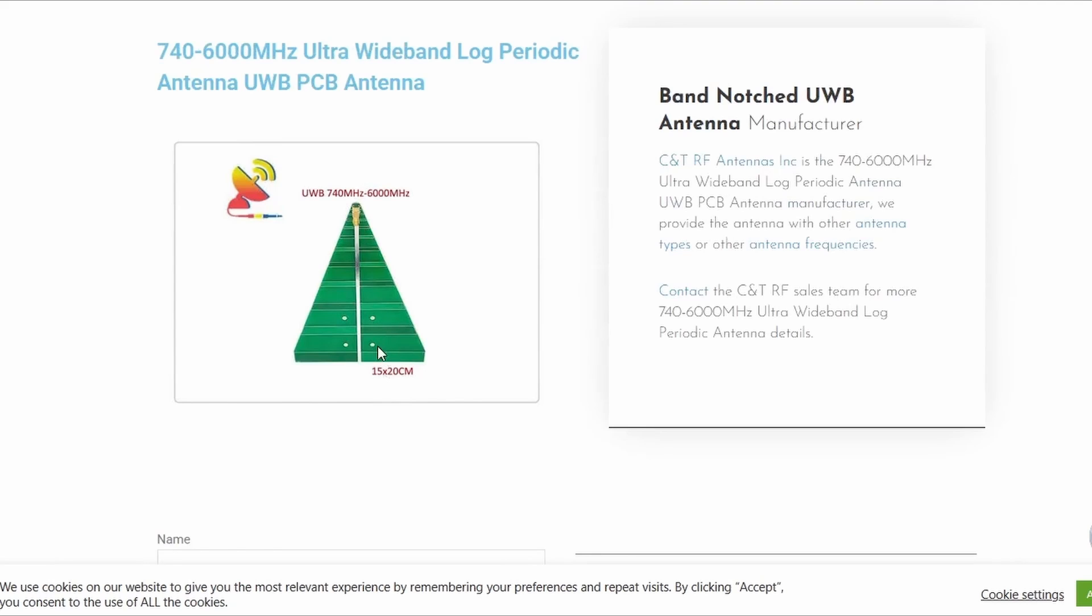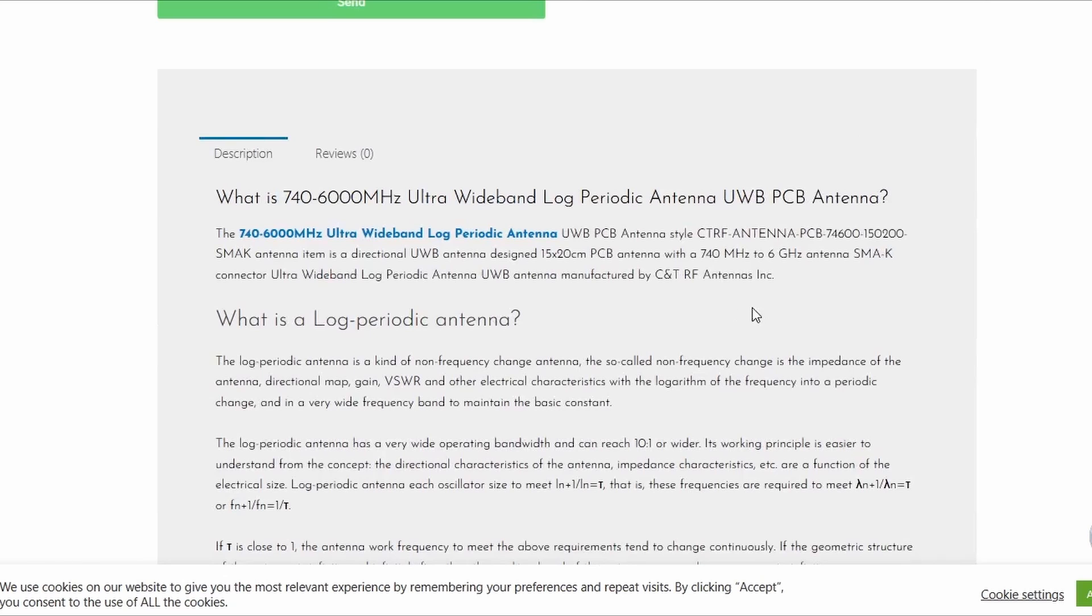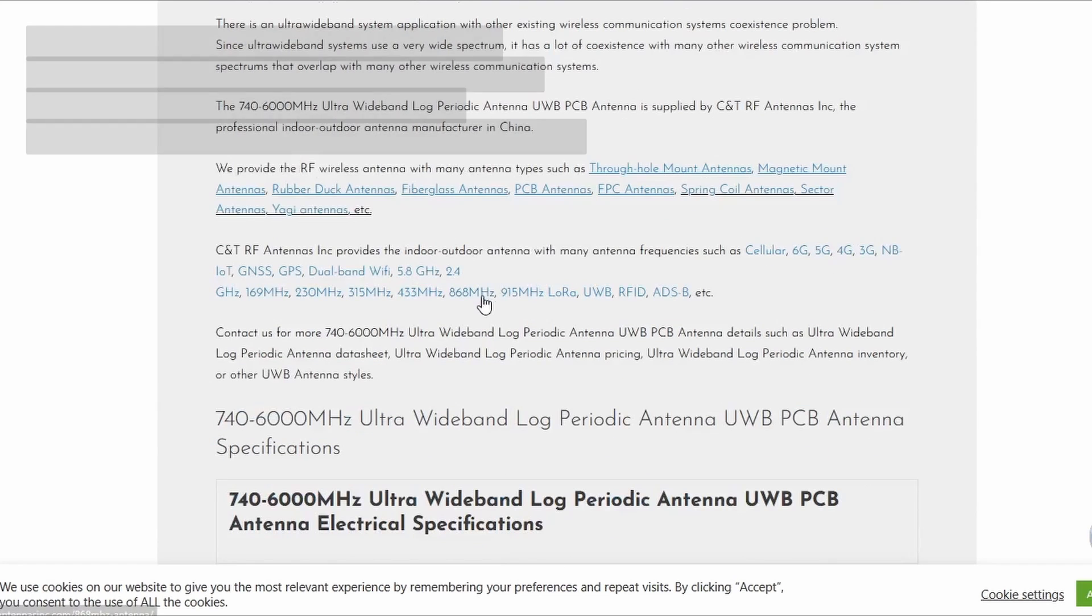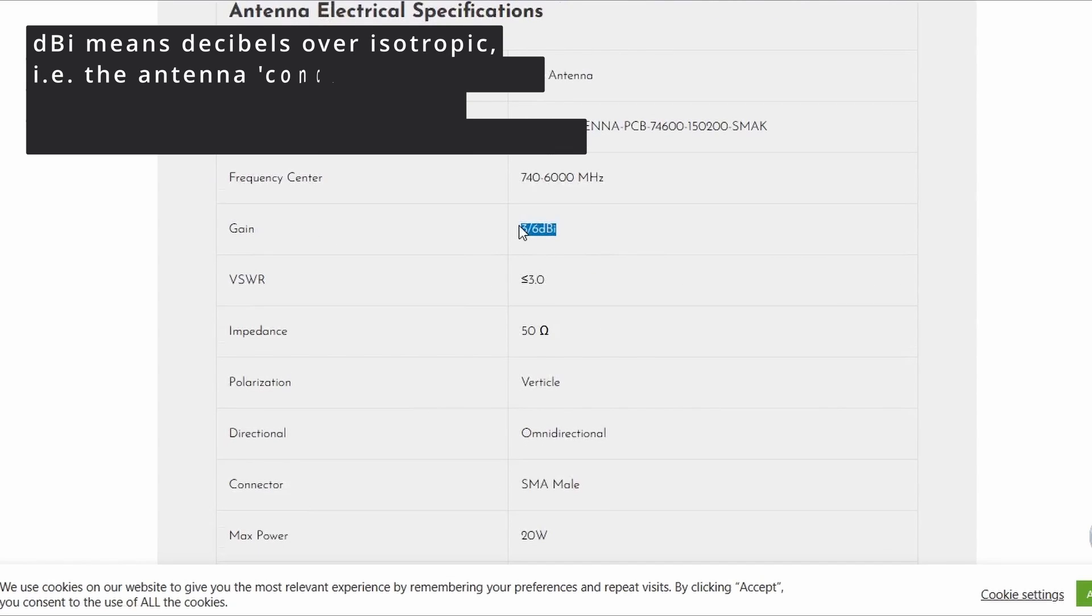It's sort of 20 centimeters long. It's got a very wide bandwidth and it gives you a lot more information about what they are. So it's a log periodic antenna. And basically the bottom line is it should give you around, this one gives you three to six DBI.